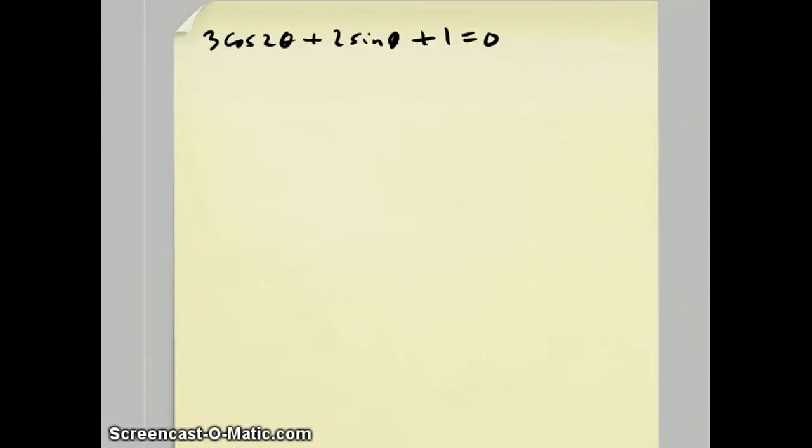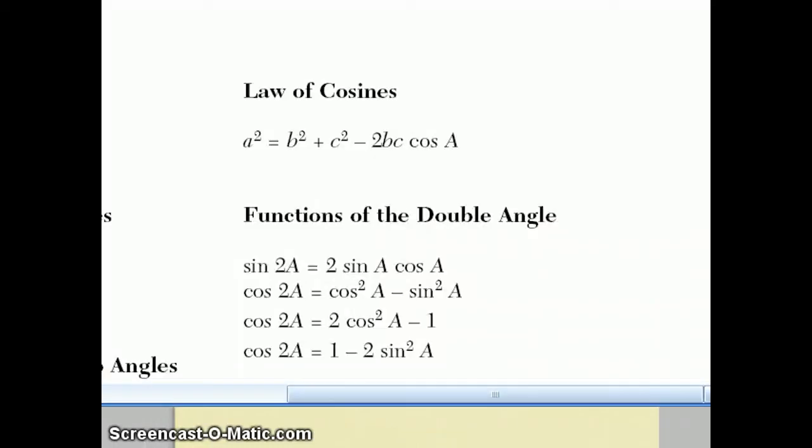you have your formula sheet where they have a couple of versions of cosine 2 theta. If you take a look, this is given to you in the region's function of the double angle. And of these three formulas, the one that's most relevant is this one because by replacing cosine 2 theta with 1 minus 2 sine squared theta,